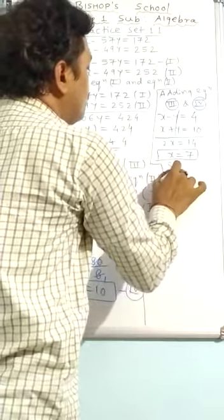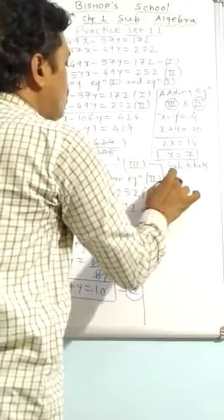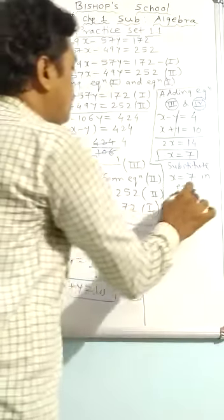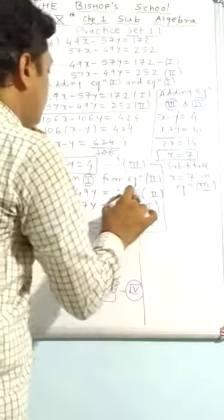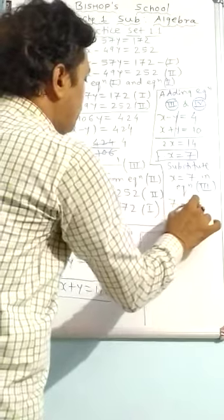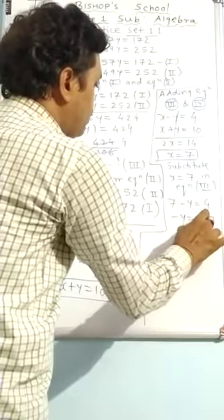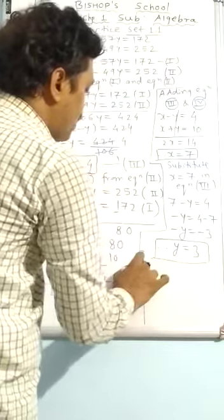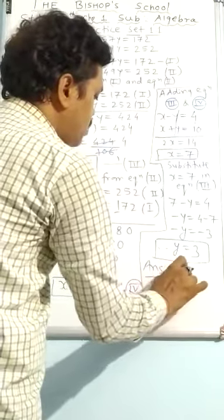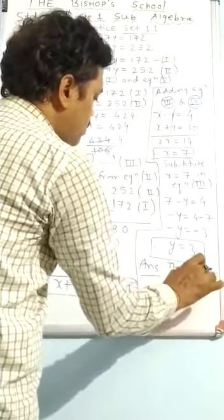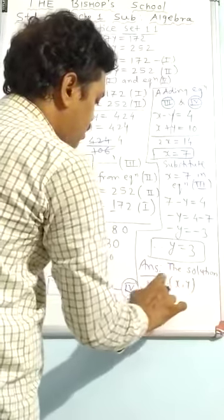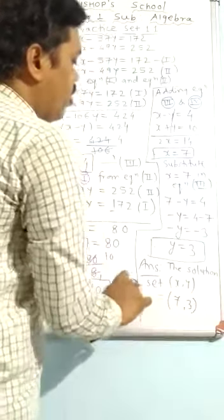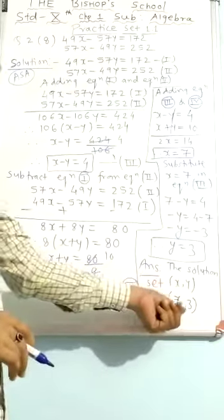Now substituting x equal to 7 into equation 3: 7 minus y equal to 4, so minus y equal to 4 minus 7, minus y equal to minus 3, therefore y equal to 3. The solution set: x comma y equal to 7 comma 3.